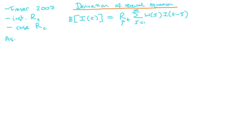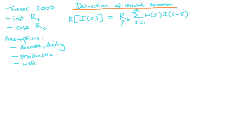In order to derive this equation we're going to make a range of assumptions. We're going to assume that our data are discrete at the daily level — this just makes the derivations easier, but the same process holds for continuous time. Our model is inherently stochastic, we assume the population is well mixed, and we assume no heterogeneity within the population — specifically no heterogeneity in the infectiousness profiles of individuals.